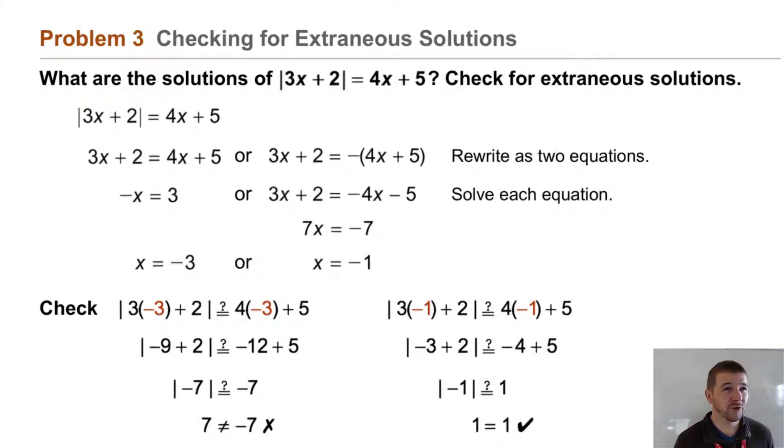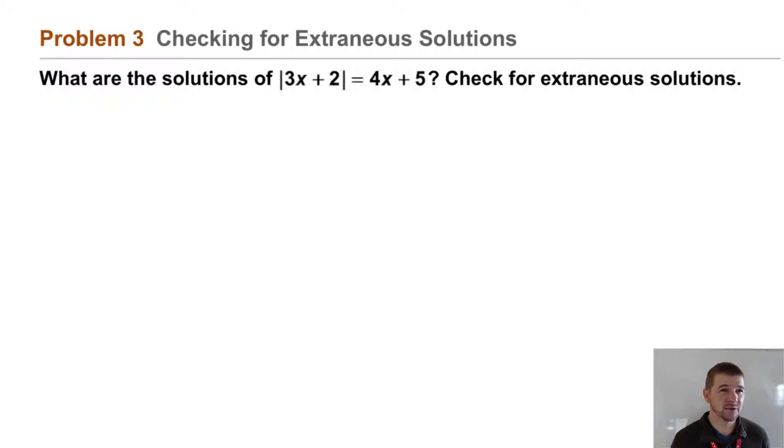Problem 3, checking for extraneous solutions. What are the solutions of the absolute value of 3x plus 2 equals 4x plus 5? Check for extraneous solutions.